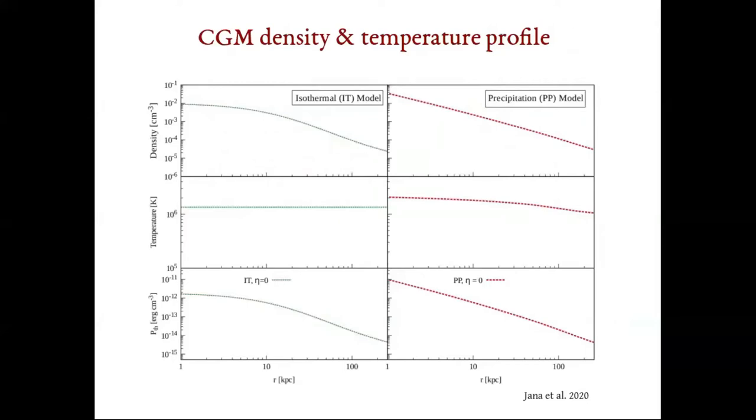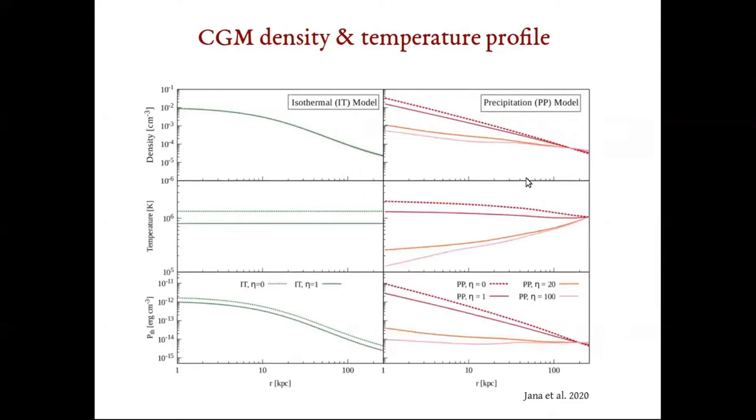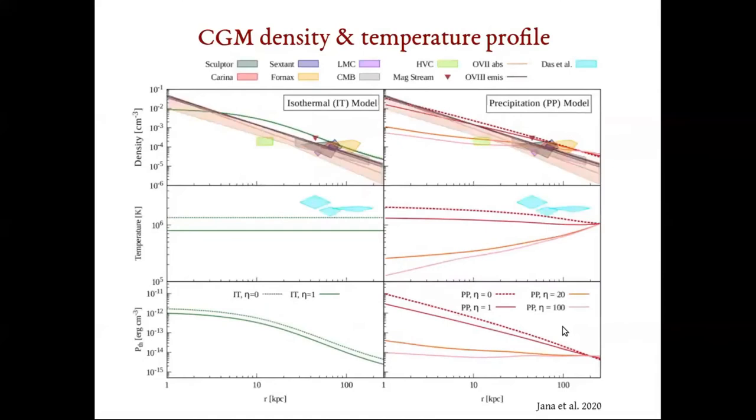To calculate the gamma-ray and radio flux, we need the density and temperature profiles. There are two widely studied analytical models for the CGM. With dotted line in the left panel, we show the isothermal model where the CGM temperature is held constant and in the right panel, the precipitation model where the density and temperature profiles are modeled depending on the ratio of cooling time to free-fall time. We modified these two models to include the non-thermal cosmic ray component taking eta as a parameter. The solid lines here show the profiles with different values of eta. It turns out that the modified models satisfy the density and temperature constraints from the observations.